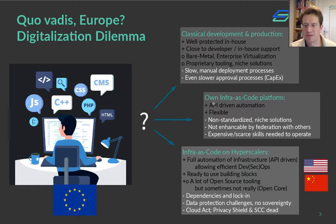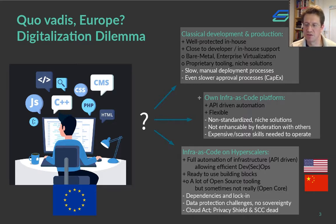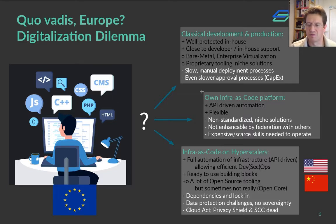A number of European companies have gone down the way of using smaller European providers or building their own infrastructure as code platforms, so you can deliver to your engineers full API-driven automation. The trouble with that is you end up with a non-standardized niche solution, which is not very efficient in the long term because you need really expensive and scarce skills to operate such infrastructure reliably. In addition, all the building blocks you want you need to build yourself, and you cannot do cloud bursting or consume resources from another cloud because you've built your own platform.